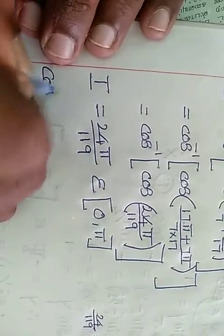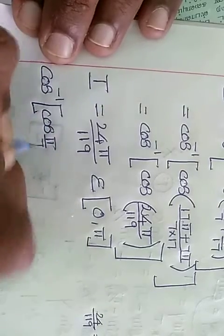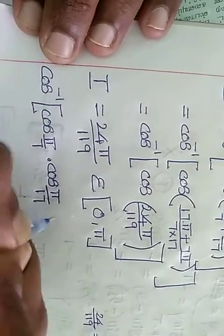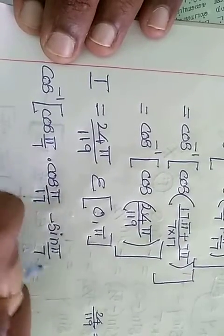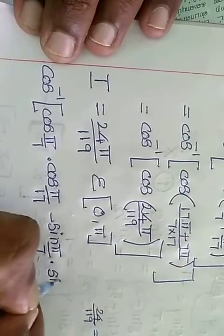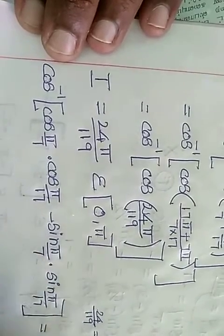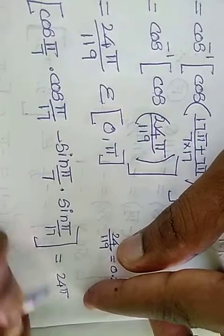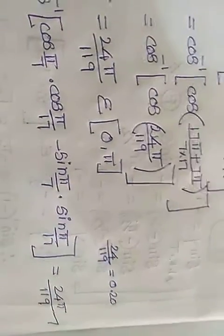So cos inverse of cos pi by 7 into cos pi by 17 minus sin pi by 7 into sin pi by 17 equals 24 pi divided by 119. Finished. Thank you.